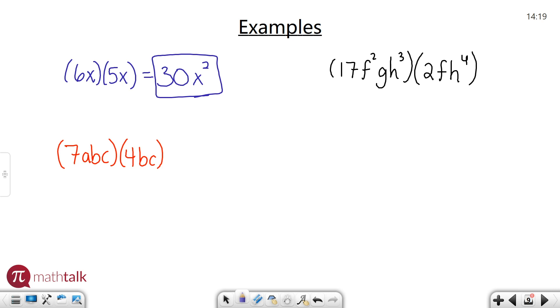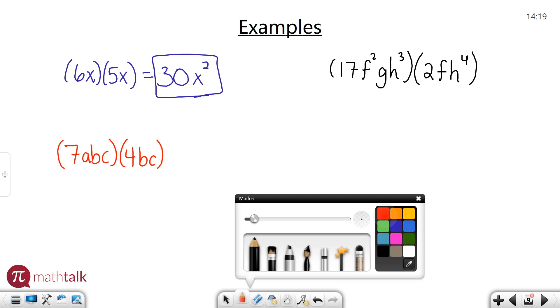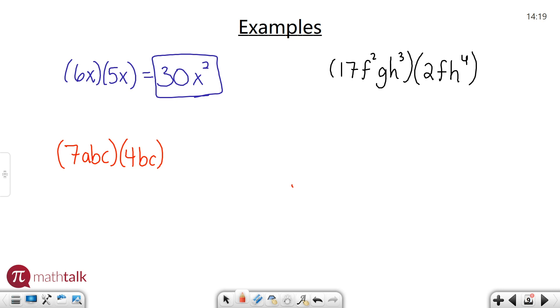Let's look at a more challenging problem with more variables: 7abc times 4bc. Keep in mind that not all variables are the same, and that's alright. When you're adding and subtracting terms they have to be the same, but when you're multiplying they don't have to be the same.